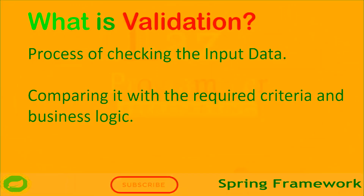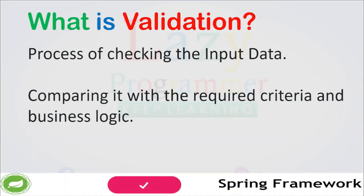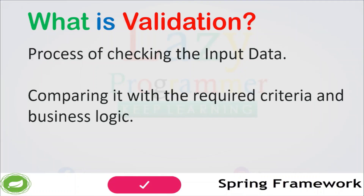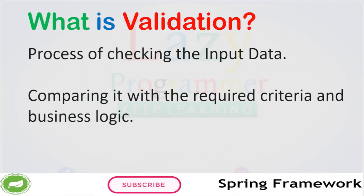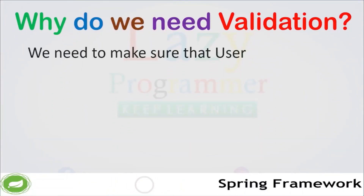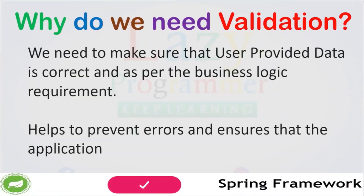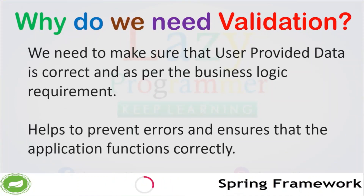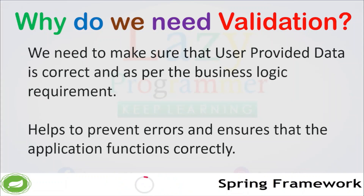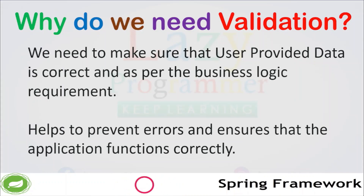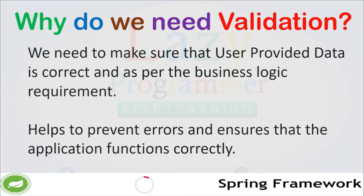In a Spring application, validation is performed using the validation API which is provided. The validation API provides a set of annotations and classes that can be used to define the rules for which we want to check the data. Validation is an important part of any application that accepts user inputs, and it helps to prevent errors and ensures that the application functions correctly.